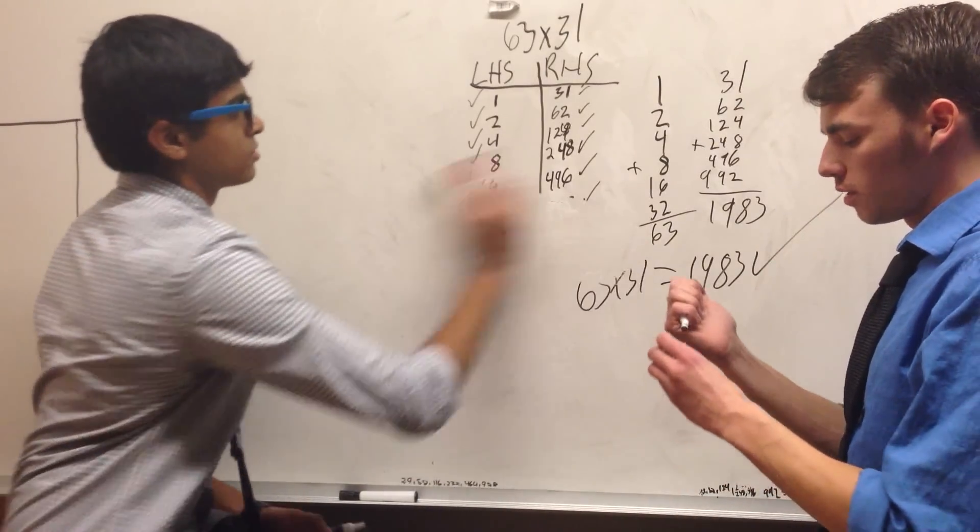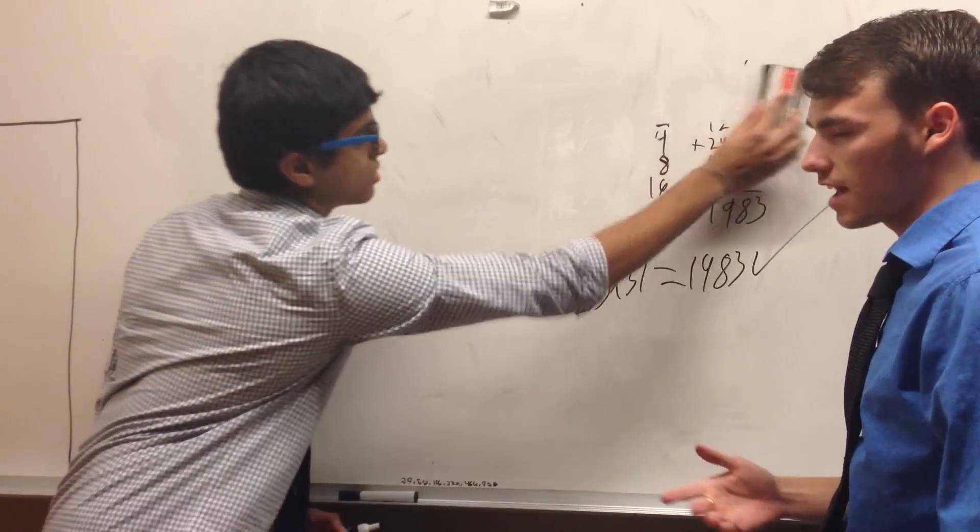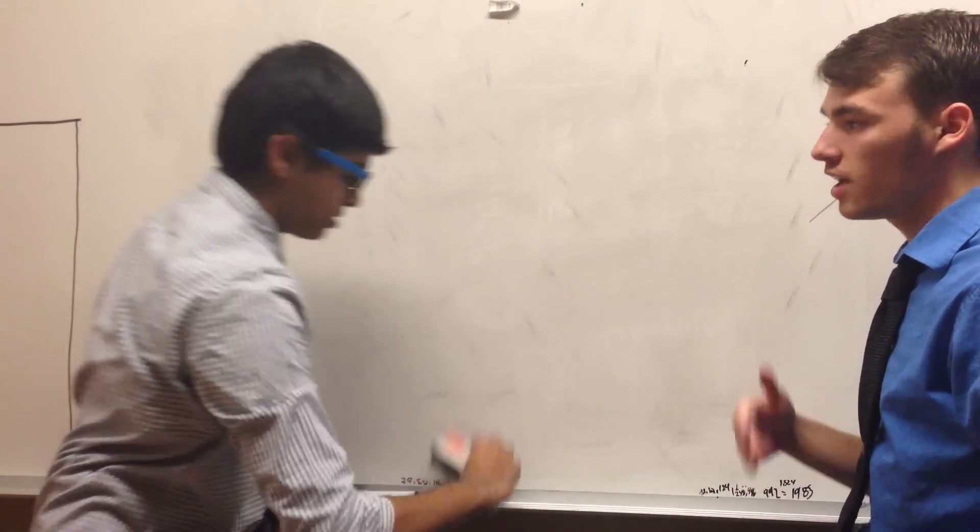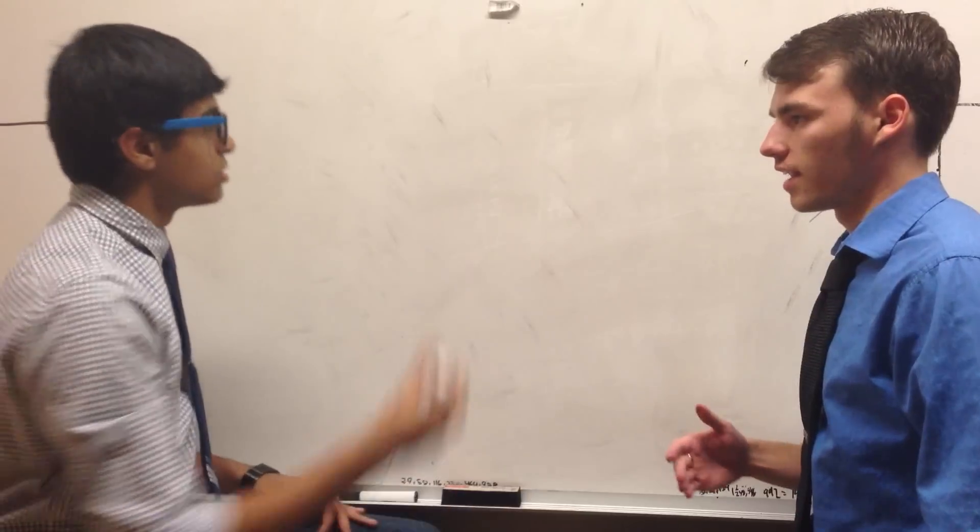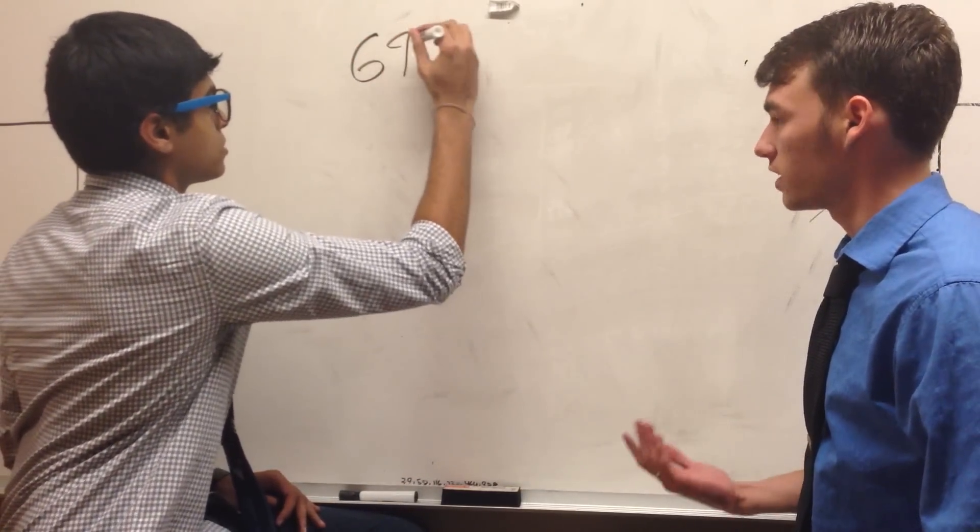Another way to do math like an Egyptian is to do division. Let's pick two numbers that we can't divide right off the top of our head, like 696 and 29.